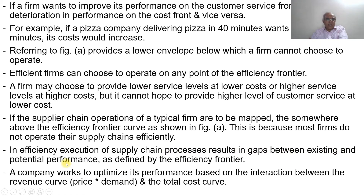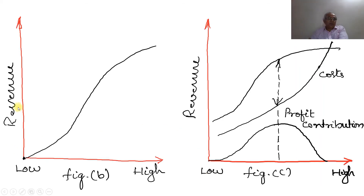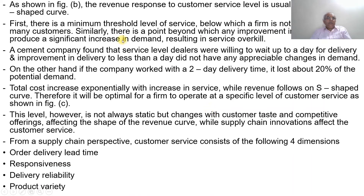Inefficiency in the execution of supply chain processes results in gaps between existing and potential performance as defined by the efficiency frontier. A company works to optimize its performance based on the interaction between the revenue curve (price times demand) and the total cost curve. In Figure B, the revenue response to customer service level is usually an S-shaped curve.